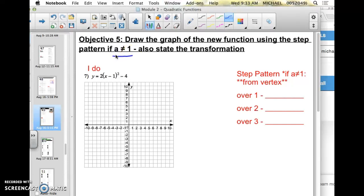This is the key thing to consider in this video when the a term is not 1. So to begin, we're still going to reference the step pattern that we've already talked about, but I'm going to look at this example: y equals 2 times the quantity x minus 1 squared minus 4.